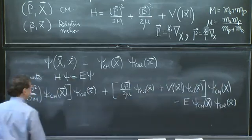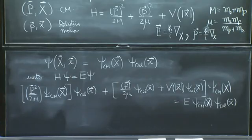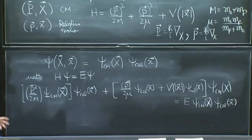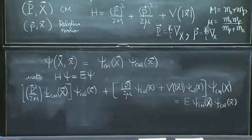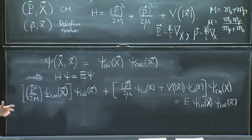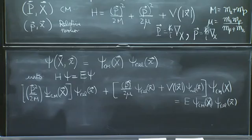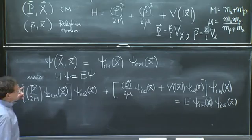All this is equal to E times ψ_cm of X ψ_relative of little x. That's the Schrödinger equation. This should remind you, it's very similar to what you did a month ago of having motion in two dimensions. You wrote the part of the wave function dependent on x, part of the wave function dependent on y, and you separated the Schrödinger equation.